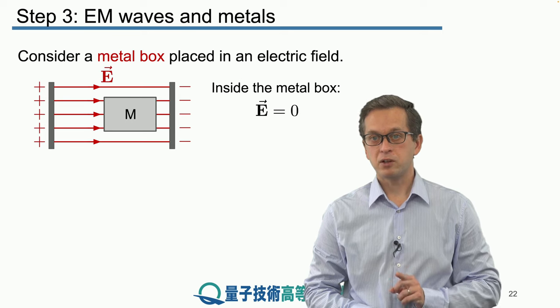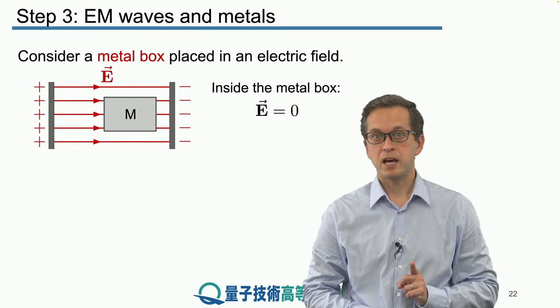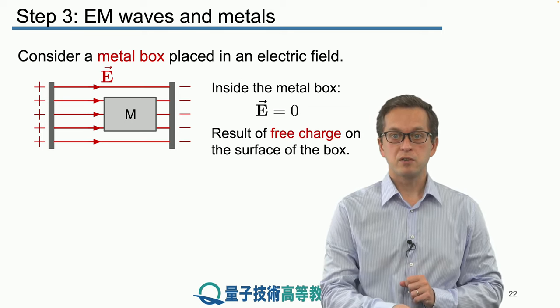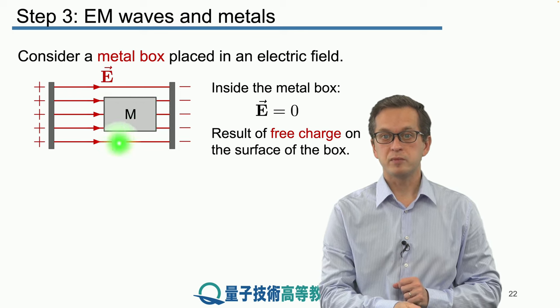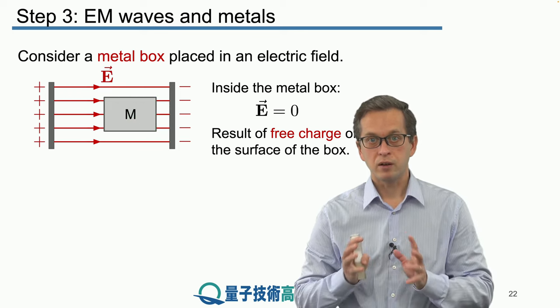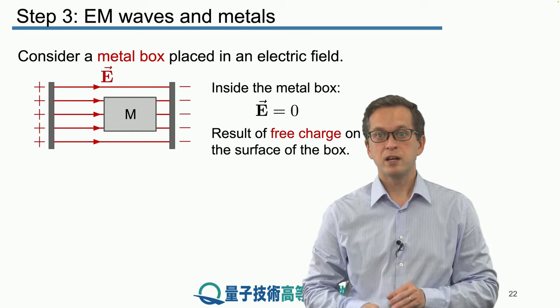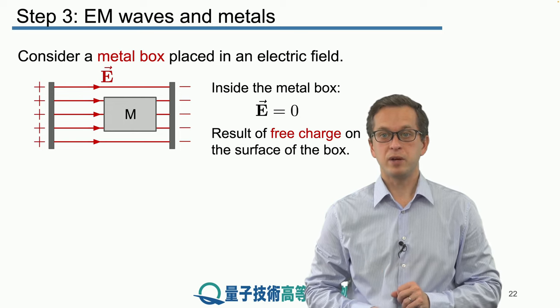we will find by applying Maxwell's first equation that there is in fact no field. And this is a direct consequence of the fact that metals have free charges. The charges on the surface of this metal box will arrange themselves in such a way to cancel any field inside the metal box.